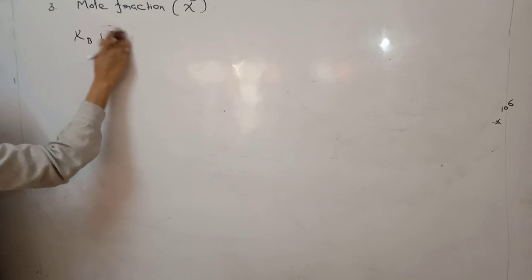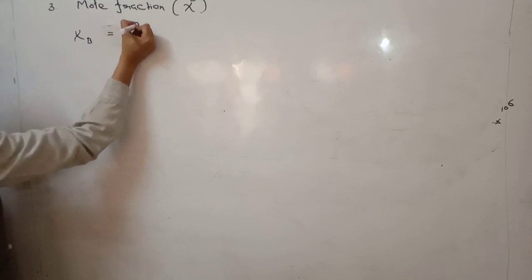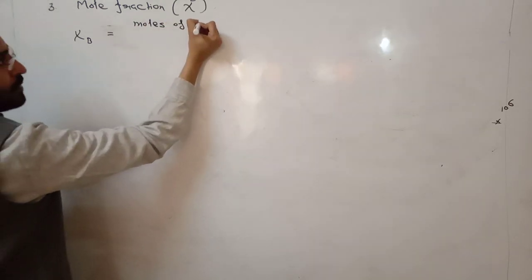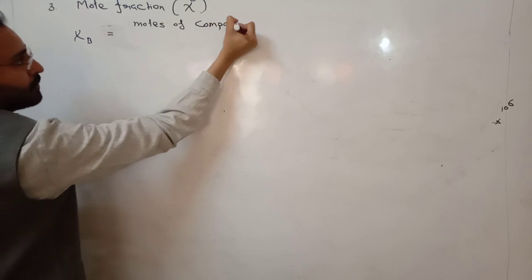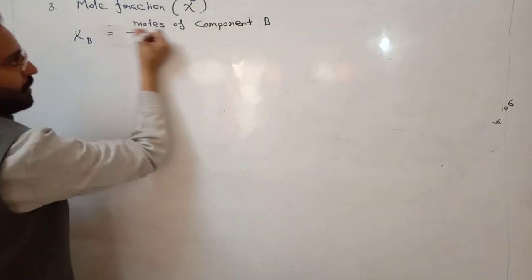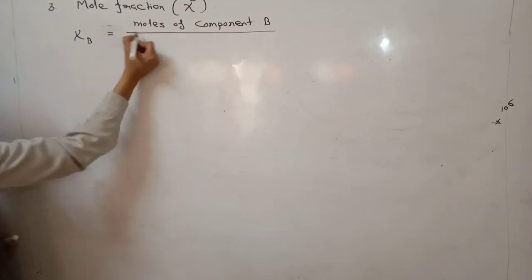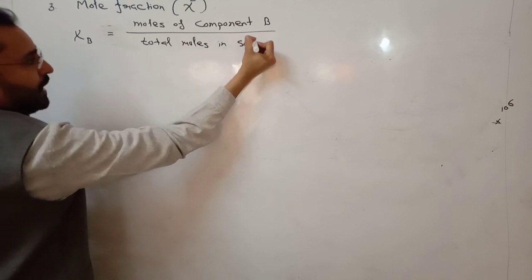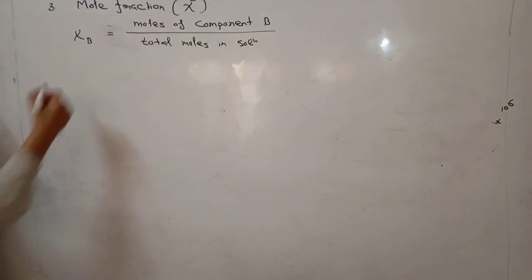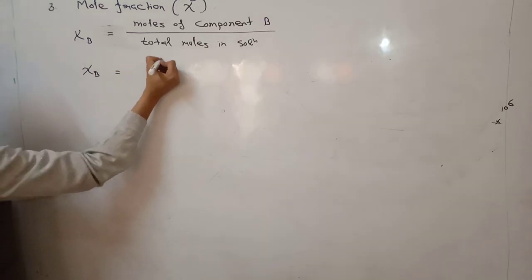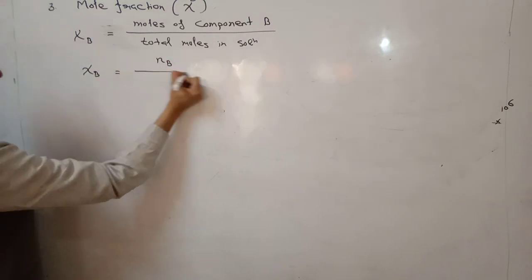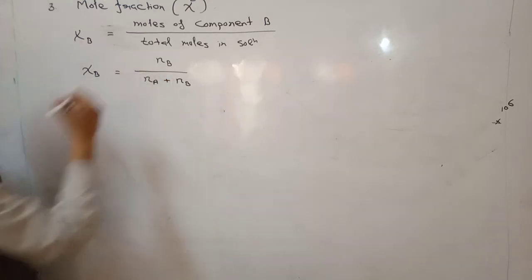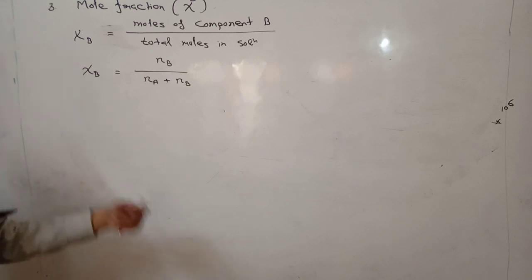Mole fraction of solute or component B is ratio of moles of component B to the total moles of component in solution. So XB is number of moles divided by number of moles of A plus number of moles of B if solution is binary.